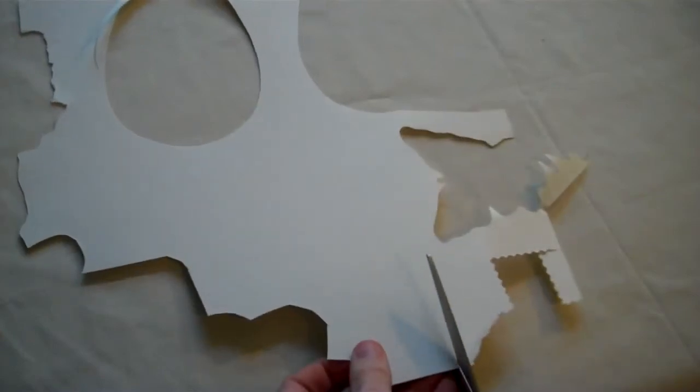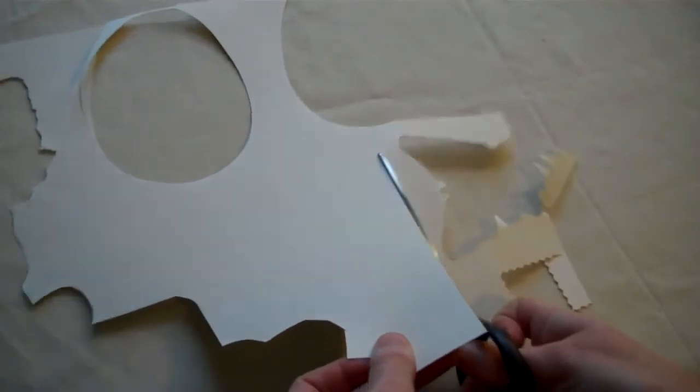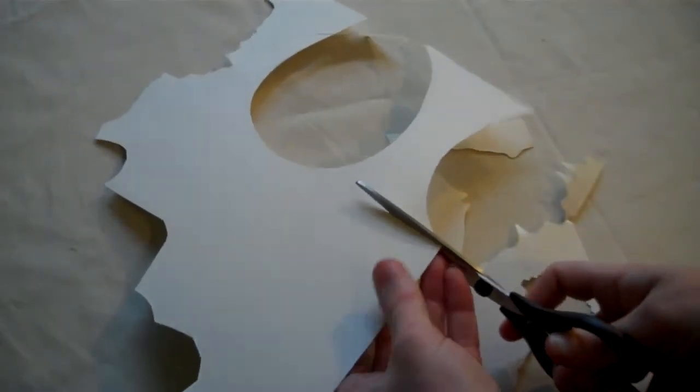So to make the card into a pop-up, you'll need to cut yourself a rectangle, about three quarters of an inch wide and about 5 inches long.